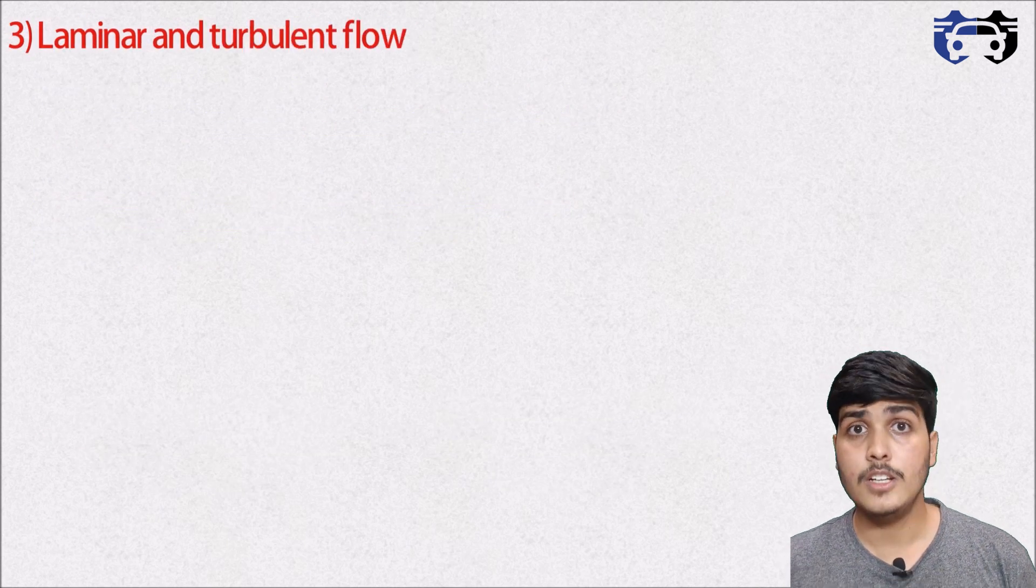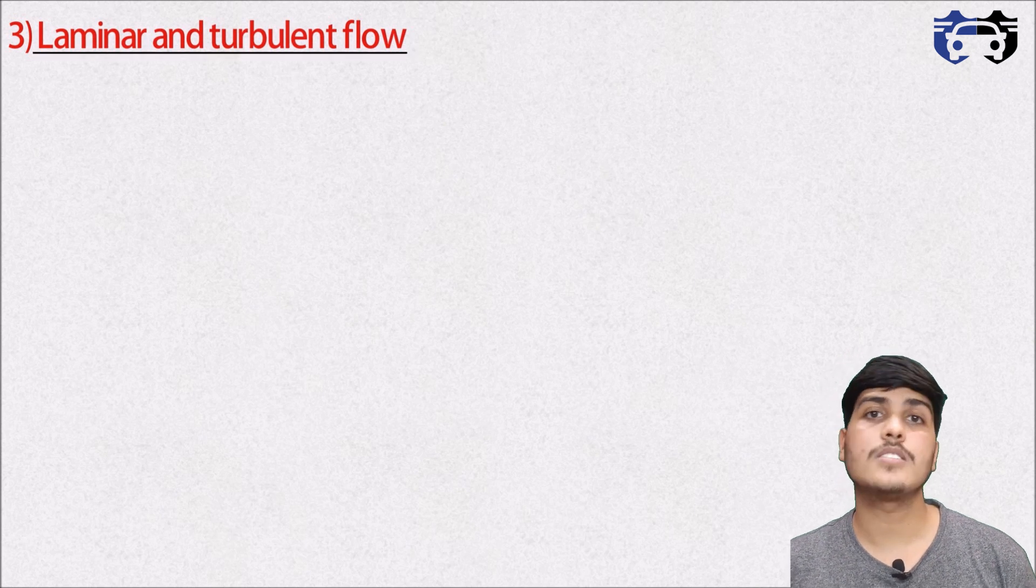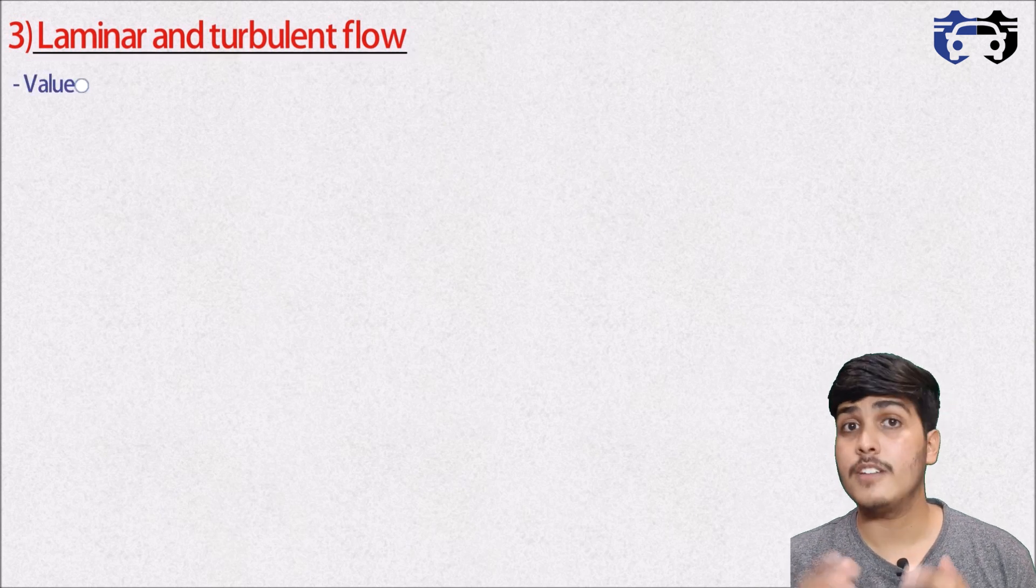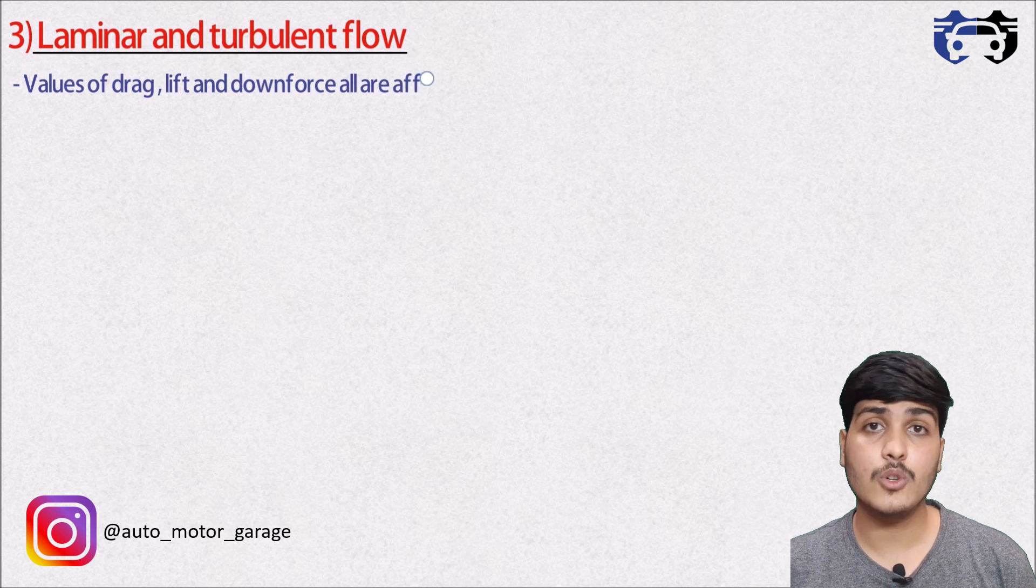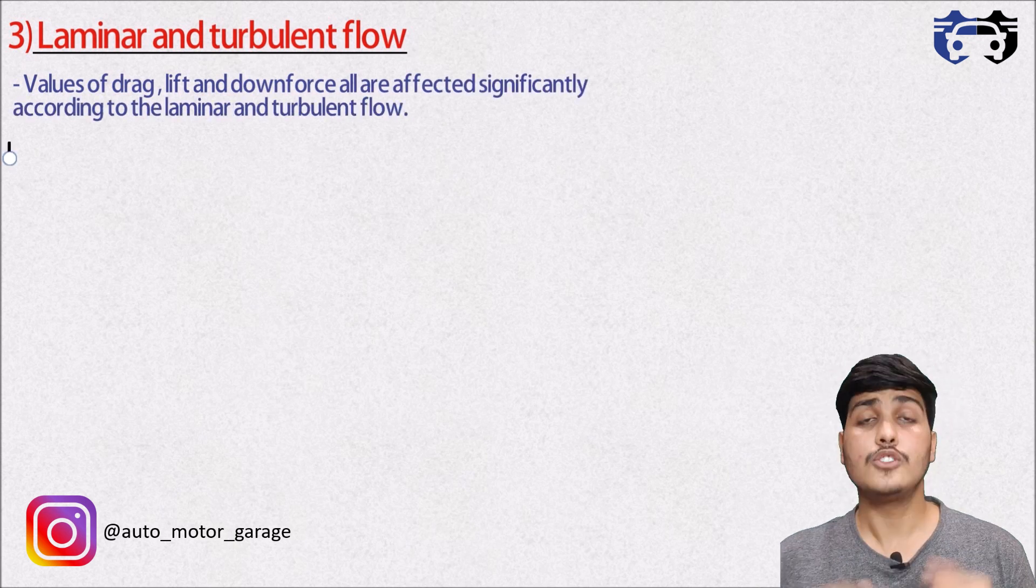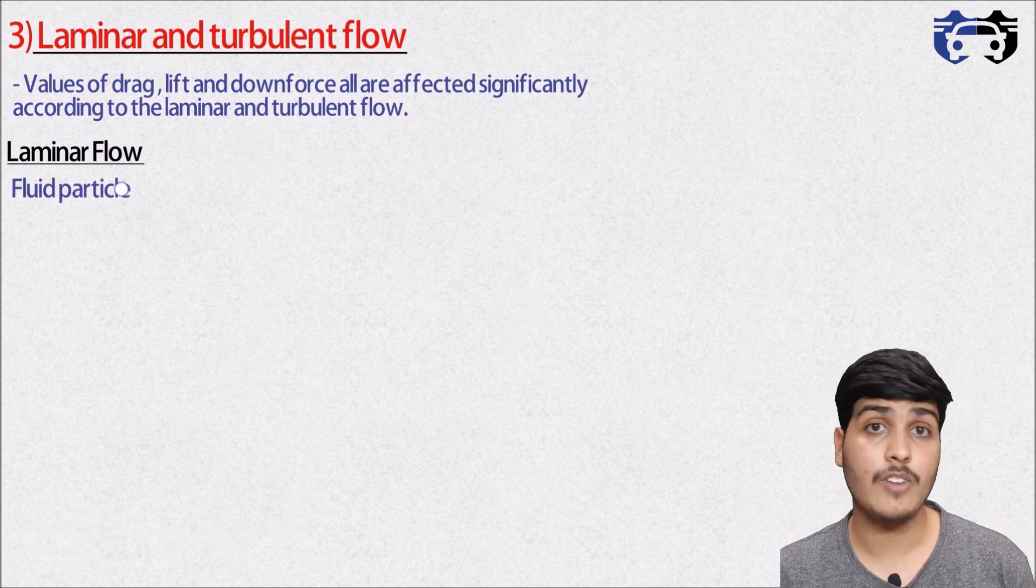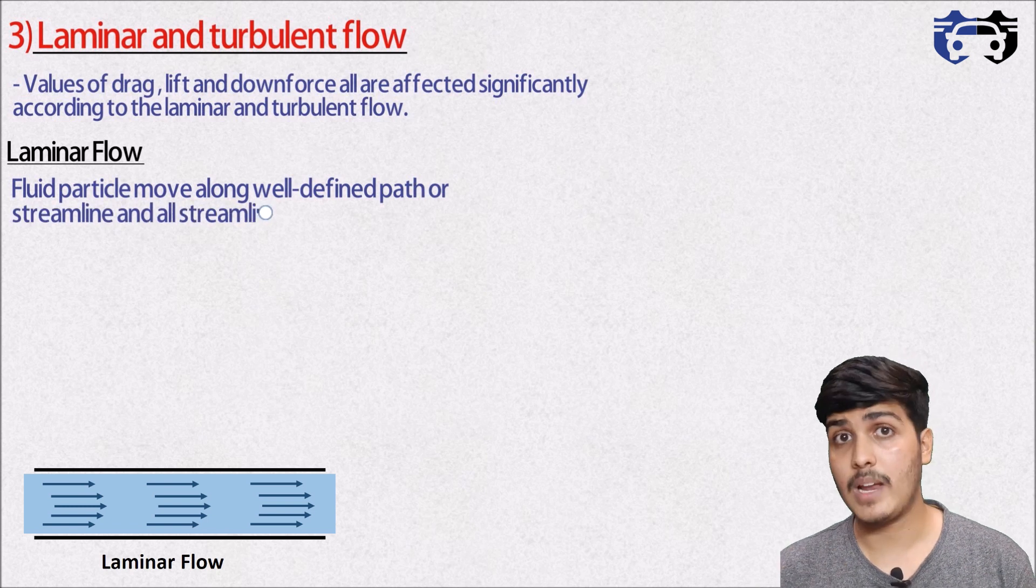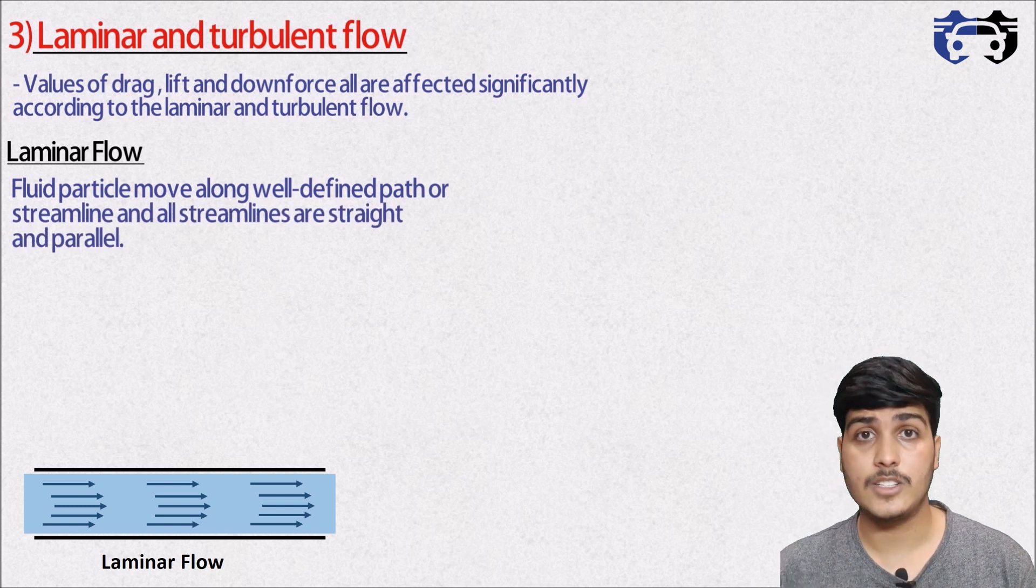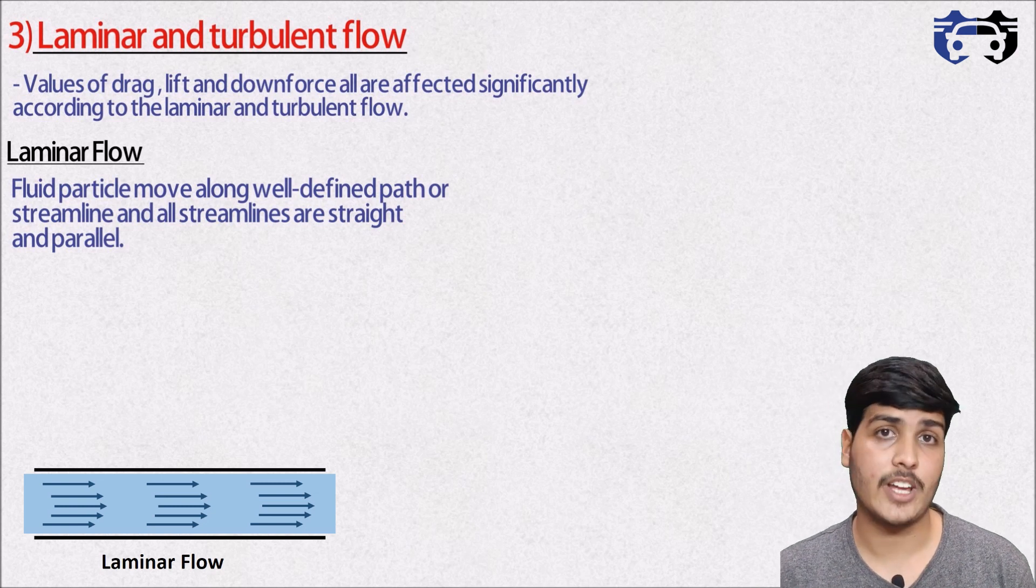Number three is the laminar and turbulent flow. These two flows are most important while studying the aerodynamics of race car because the features such as flow suppression, vehicle drag, lift and downforce are significantly affected according to the laminar and turbulent flow. So what is laminar flow? It is a type of flow in which the fluid particles move along the well-defined path or streamline and all streamlines are straight and parallel. It is also called the free stream flow and the motion of fluid particles is well organized here.